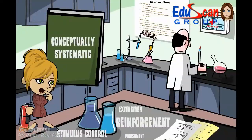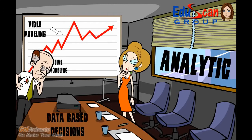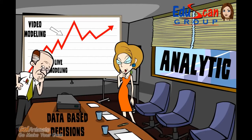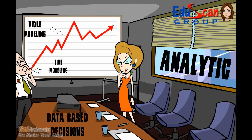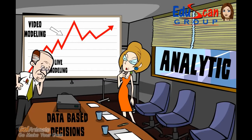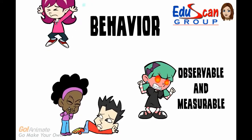Conceptually systematic means that the intervention is consistent with the principles that have been determined to be effective as defined in the research in behavior analysis. These can include stimulus control, extinction, and reinforcement. Being analytic means making data-based decisions. To do this, data must be collected and displayed.